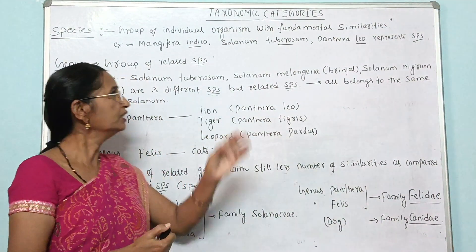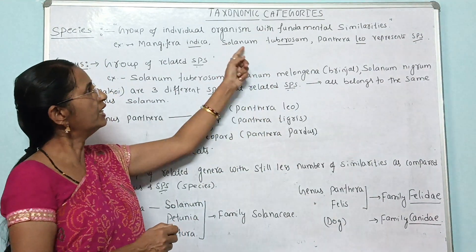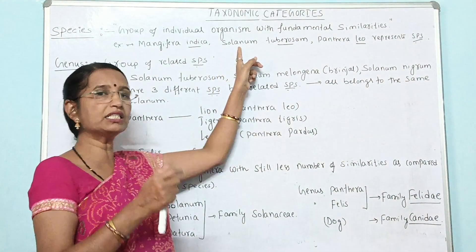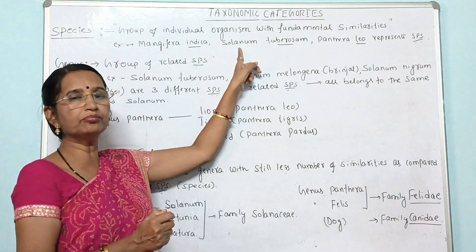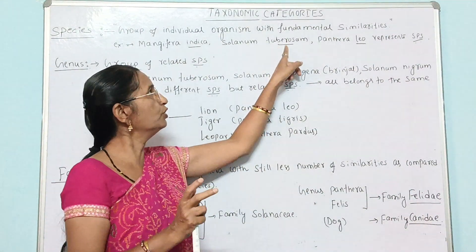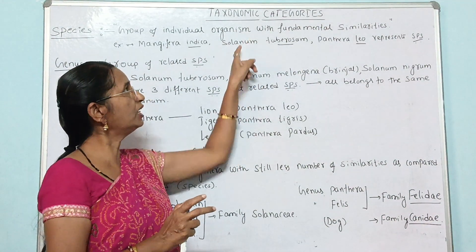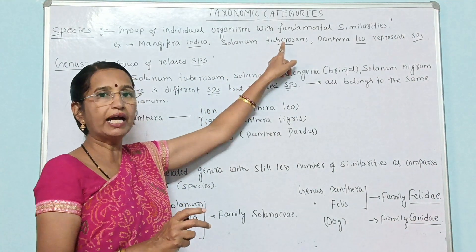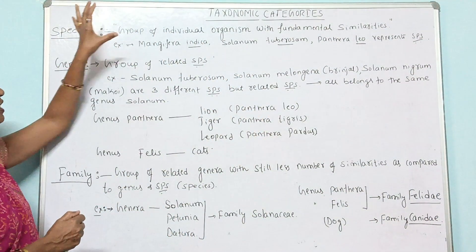Sometimes a single genus may include a single species, or sometimes a single genus may include more than one species. For example, Solanum is one genus under which three species exist: Solanum tuberosum, Solanum melongena, and Solanum nigrum. So more than one species can be included under a single genus. This is a clear example of species.